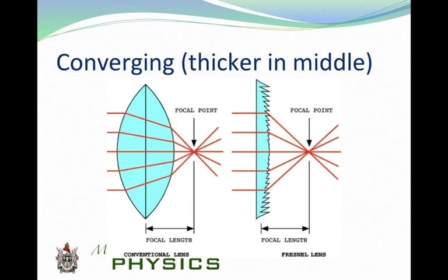We're going to start with a converging lens, which is biconvex, but we don't typically describe it that way — we just say it's converging. You know it's converging because it is thin on the outside and thick in the middle. The idea of the converging lens is that the rays are going to come together when they refract and meet at a focal point. They're going to converge or come together.